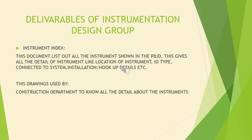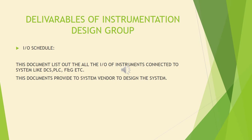Different deliverables prepared by the instrument design group include the instrument index, which is a base document listing all instruments shown in the P&ID. It gives details such as instrument location, I/O type, connected system, and installation/hookup details, and is used by the construction department. The I/O schedule lists all I/Os of instruments connected to systems like DCS, PLC, and F&G, providing information for the system vendor to design the system.